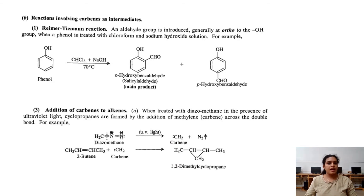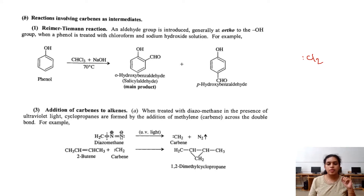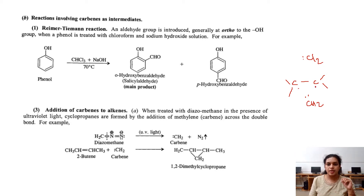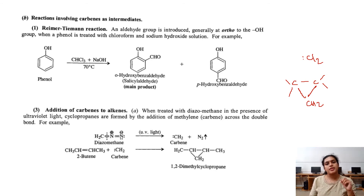When it comes to reactions, dichlorocarbene is the intermediate formed in the Reimer-Tiemann reaction. Another important reaction of carbene is addition to double bonds — wherever a double bond exists, carbene attaches to it. With 2 electrons on the carbene and one electron on each carbon of the double bond, a triangular structure easily forms, producing a cyclopropane derivative.